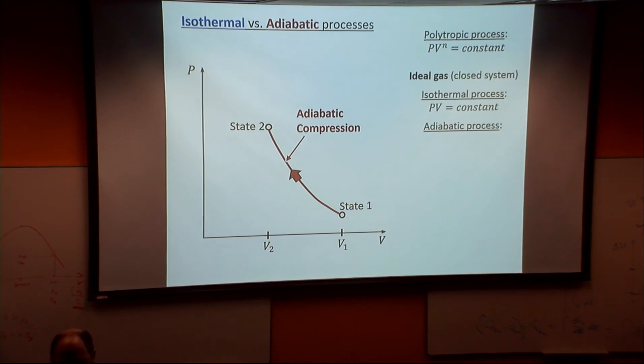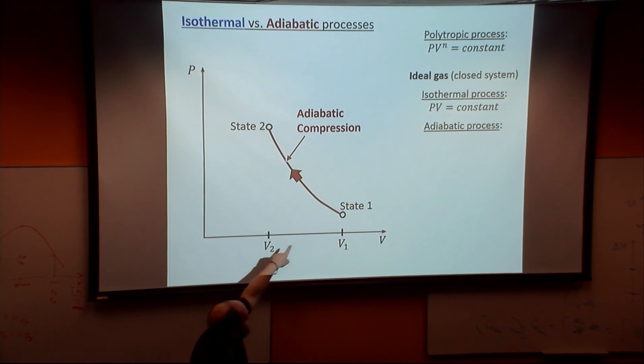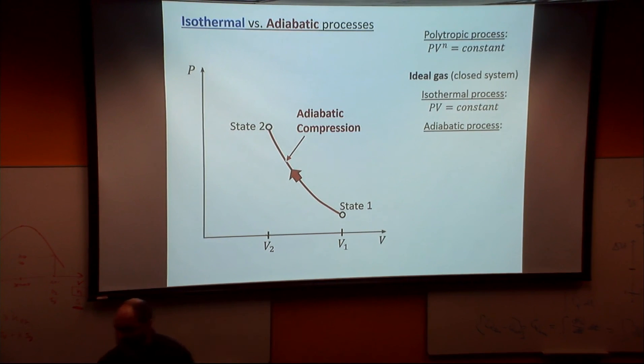As soon as you destroy those adiabatic boundary conditions, you can never get back to your initial state in one adiabatic process step. I can have a different process, a polytropic process, with a different N or a different gamma.